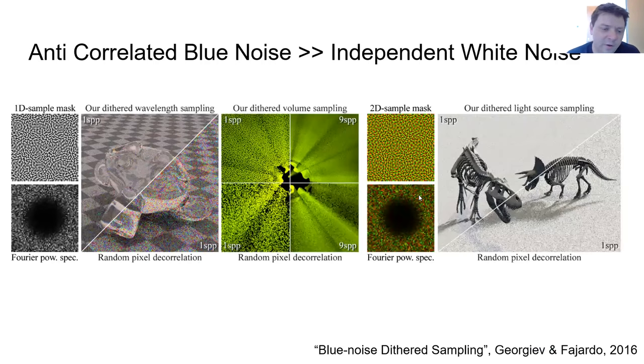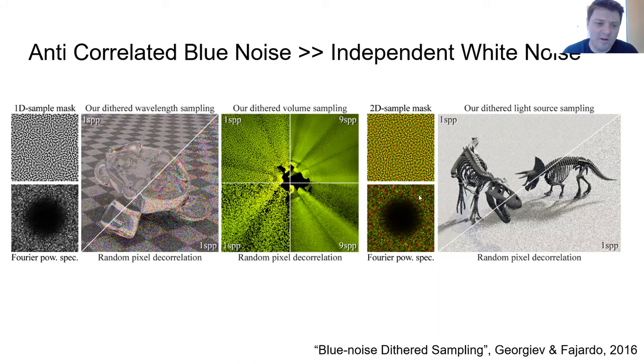However, at the lower sample counts, it leaves noise behind. But not all noise is created equal. For instance, in the blue noise dithered sampling paper by George Fajardo, they show us how anti-correlated blue noise just gives them a much better result than independent white noise, even though it has the same error level. And the reason for this is that essentially...